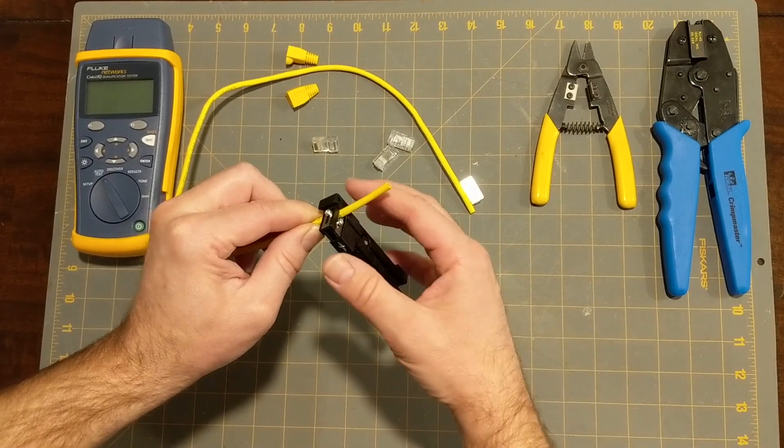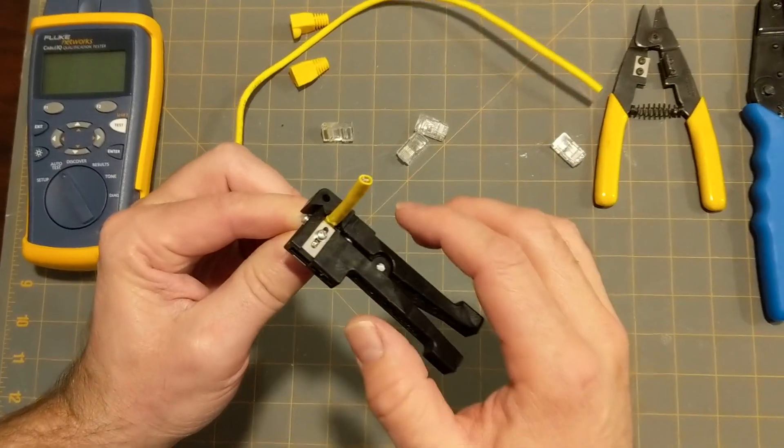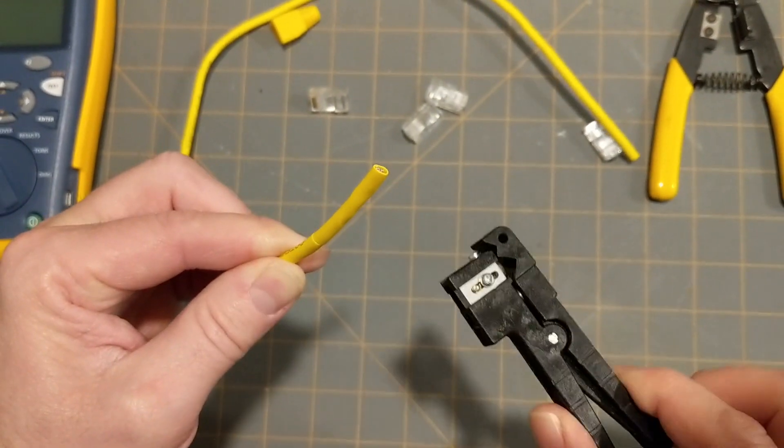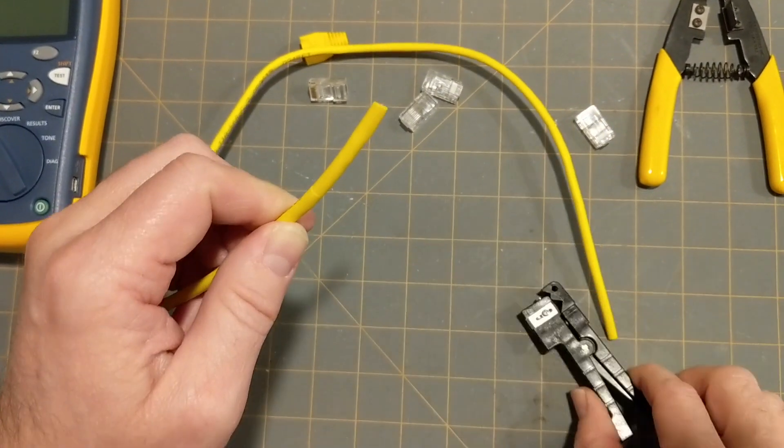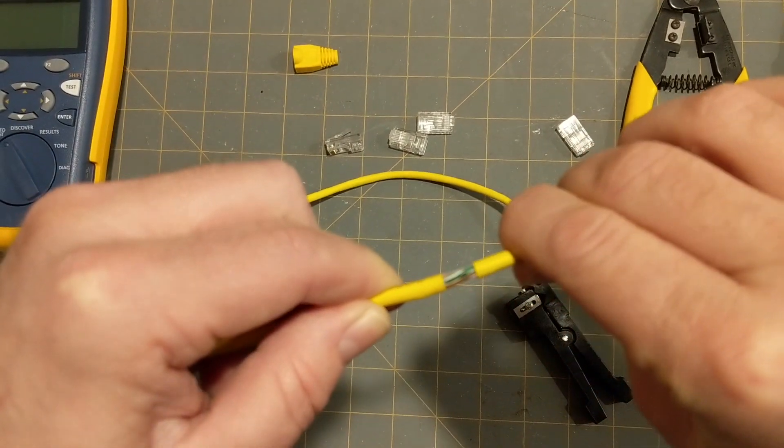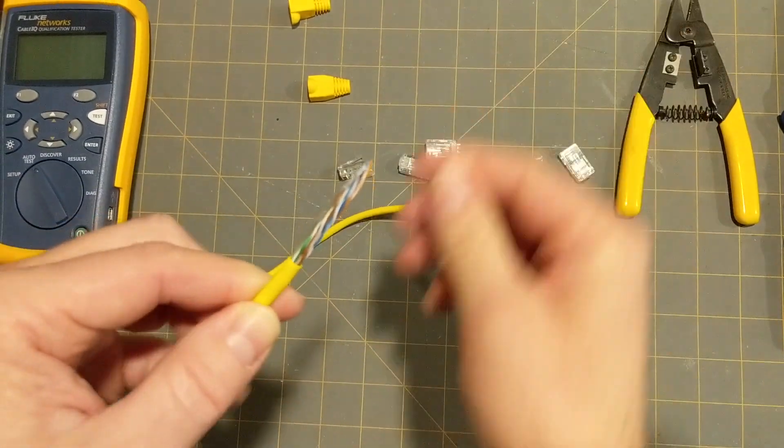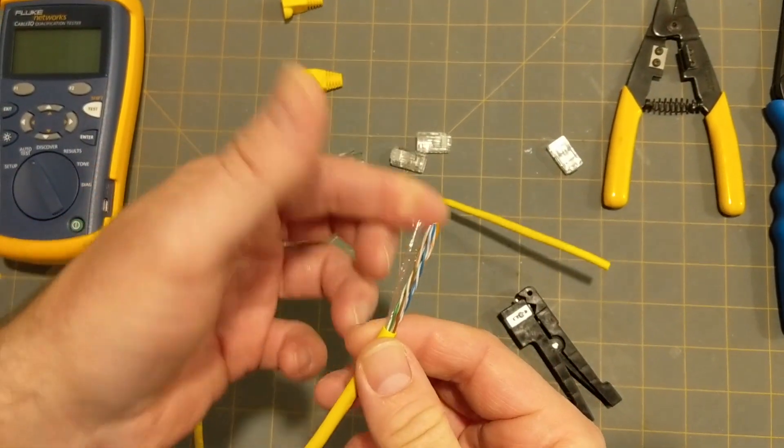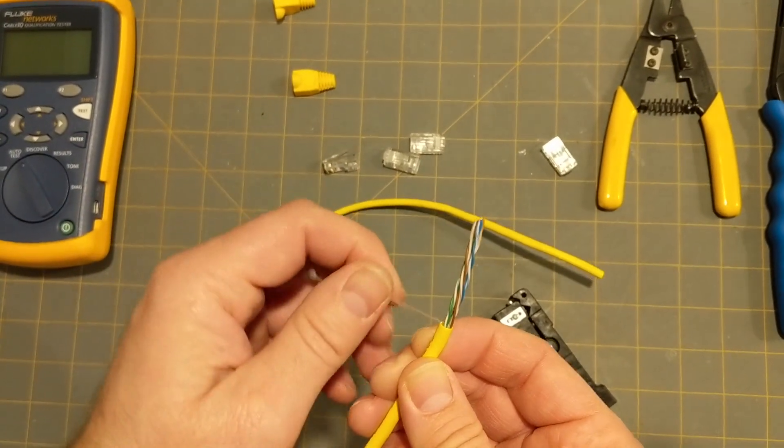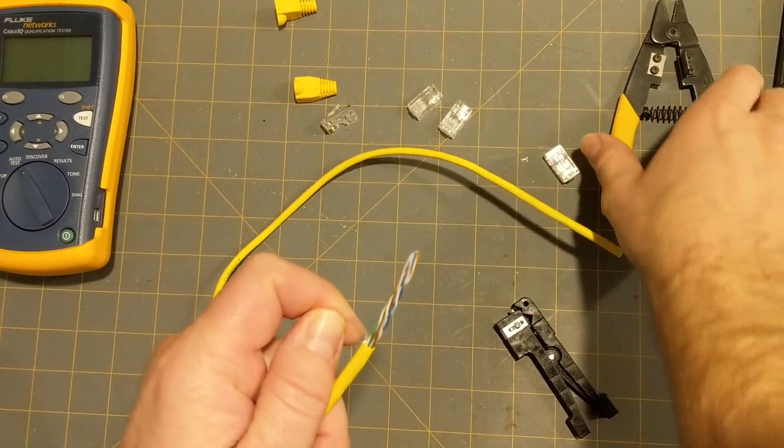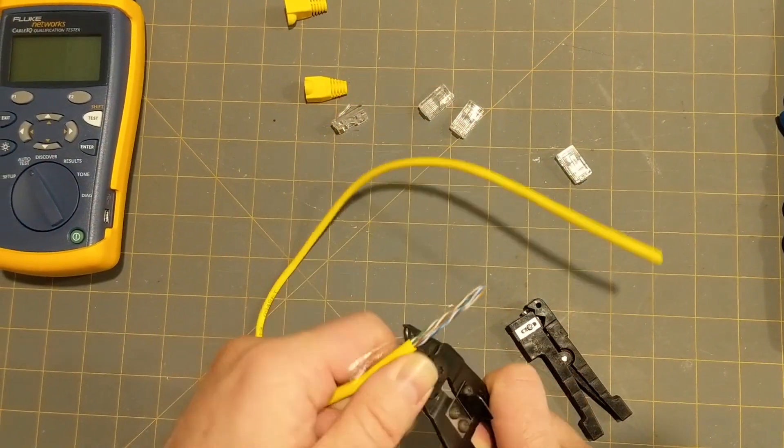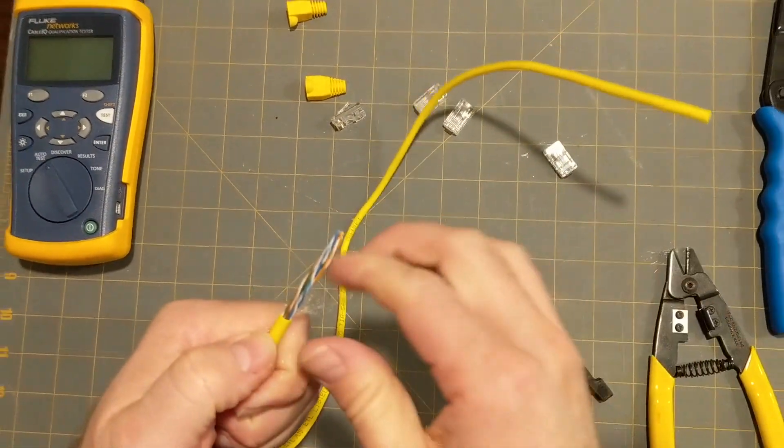So, what we do is we put the cable inside the jaws of the stripper, and we rotate it around about one or two times and let go. You'll notice the little blade on the side has made a cut in the side of the cable, which allows us to just pull off the outer insulation without damaging the interior insulation. You'll also notice this piece of fiber right here. This string is actually used to give it tensile strength when you're pulling this cable through walls and through ceilings.